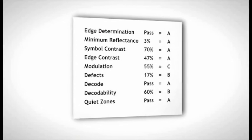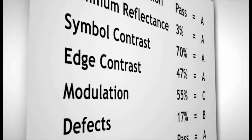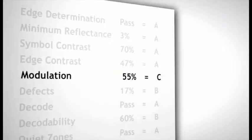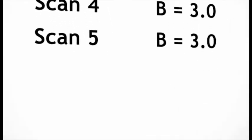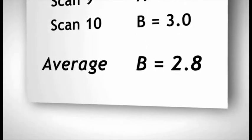On each scan, the verifier will report grades for each of the parameters and will report the poorest of all the grades it finds. The result is called the scan grade, the grade achieved in a single scan. The verifier averages the results of the 10 individual scans. This average result is called the symbol grade.